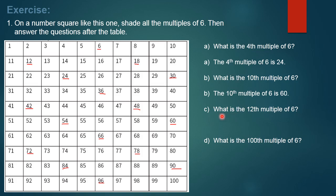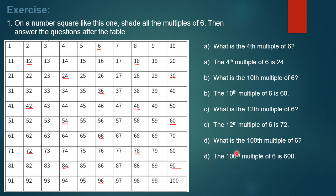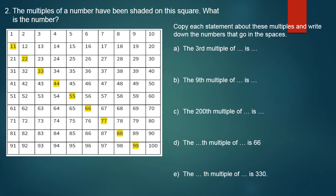Option C: what is the 12th multiple of six? 12 times 6 is 72 — the 12th multiple of six is 72. Option D: what is the 100th multiple of six? 100 multiplied by 6 is 600. You cannot find the 100th multiple in the square because we have limited numbers there, but by multiplying 100 by 6 you get 600.